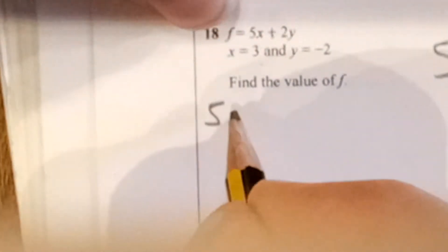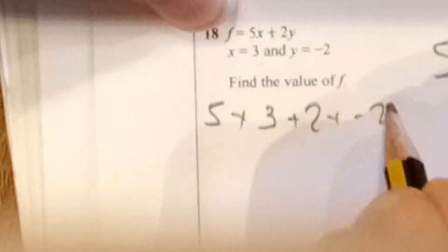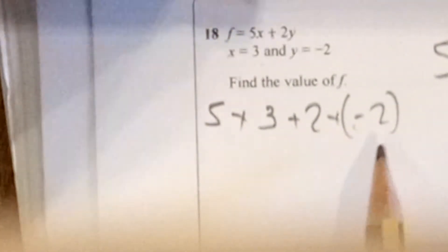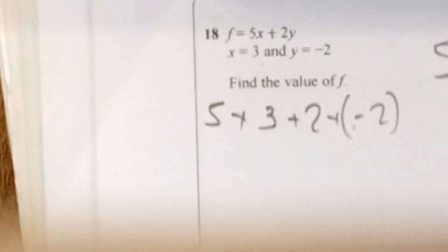So I'm doing 5 times 3 plus 2 times negative 2. Notice I'll put negative 2 in brackets, because sometimes when you calculate it can mess up.